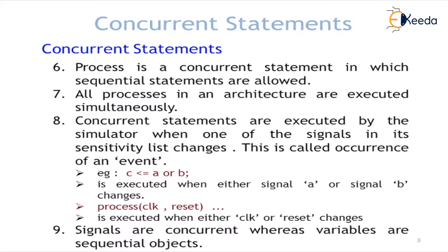Concurrent statements are executed by the simulator when one of the signals in its sensitivity list changes. A sensitivity list is a group of signals; whenever these signals change, it will affect the output. A process has its own sensitivity list. For a concurrent signal assignment statement in data flow modeling, where we are assigning values to a particular signal, the signals declared as inputs become the sensitivity list of that concurrent statement.